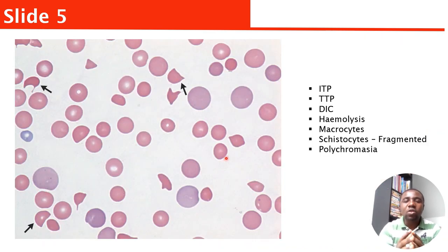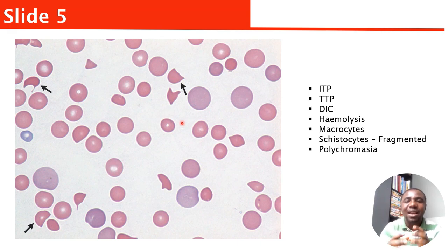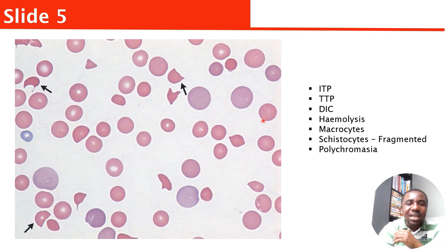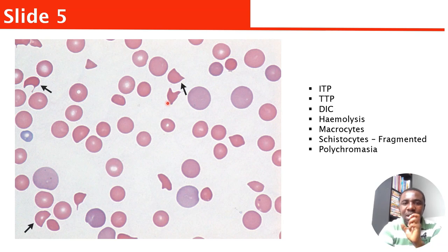This is another typical example — a question about ITP and TTP. Once you see fragmented red cells, which we call schistocytes, and you see some spherocytes and polychromasia, start thinking about hemolytic anemia. That can also be associated with ITP and TTP. In this blood film there is thrombocytopenia — very few platelets. Once there is a low platelet count and you see schistocytes and spherocytes, start thinking about ITP or TTP. The secret: schistocytes and spherocytes — think hemolysis and ITP.